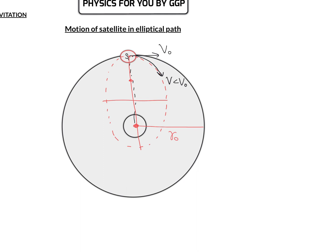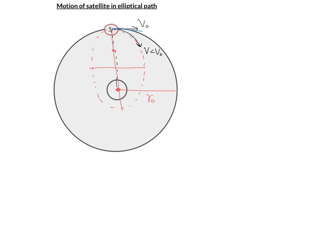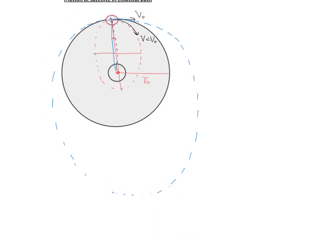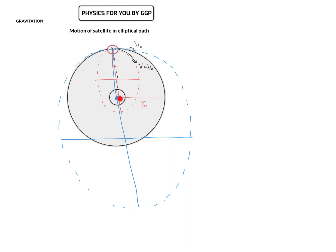There is also the possibility that if you project the satellite with a velocity greater than orbital velocity, it will also move in an elliptical path. For this elliptical path, we can draw a major axis, minor axis, and foci. Here you can observe that the center of the planet will be at the nearest focus. This applies when the velocity v is greater than orbital velocity but less than escape velocity, which is √2 times orbital velocity.